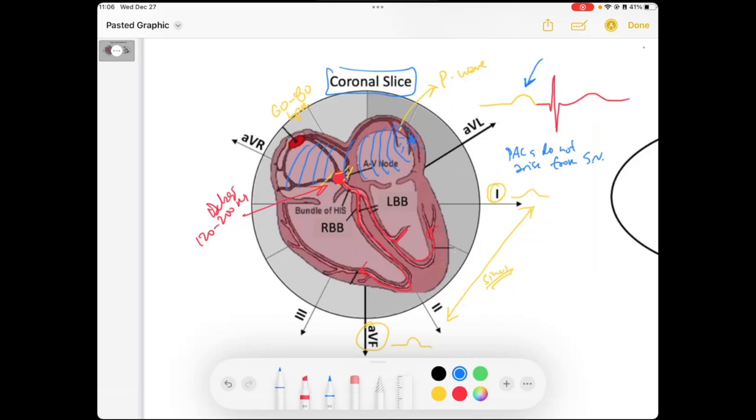And that wave would create, probably, in this case, a downward deflection in lead one, right? What I'm getting at is it's going to create a different morphology for the P wave. And that P wave, as it depolarizes the atria, is still going to be conducted through the AV node in a similar fashion. And it's going to create a QRS that looks the exact same.